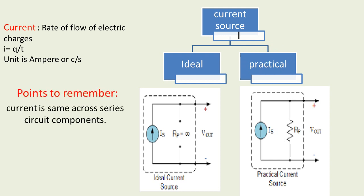An important point: current remains the same across all components connected in series. This is contradictory to the voltage statement — voltage remains the same for all sources connected in parallel, and current remains the same for all sources connected in series. I hope you understood the concept of voltage and current sources. Thank you very much.